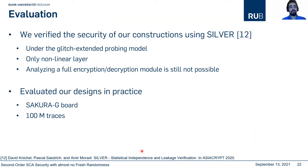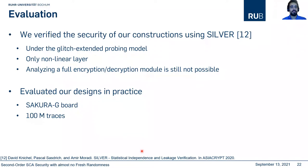We evaluated all our S-box constructions with SILVER, a verification tool that does not simplify anything and has no false positives or false negatives. We checked our constructions under the glitch-extended probing model. Since analyzing a full encryption module is not possible with SILVER, we implemented our design in FPGA, collected traces, and performed the t-test. All designs were secure using 100 million traces.